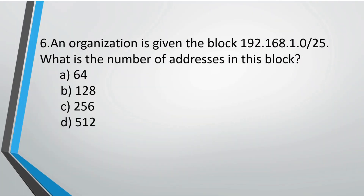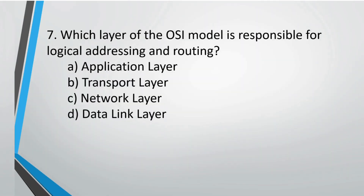Question 6: An organization is given the block 192.168.1.0/25. The number of addresses equals 2 to the power of the host bits. Here, 32 minus 25 equals 7, so the host bits are 7, and 2 to the power 7 is 128. The correct option is B, 128.